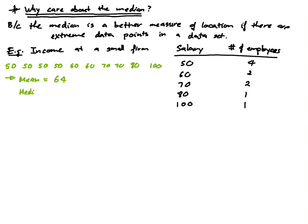Let's look at the median. To find the median, I remove the outermost values one by one until I end up with 1 or 2 values in the middle. Removing 50 and 100, then 50 and 80, then 50 and 70, then 50 and 70, I end up with 2 sixties in the middle. So the median is the average of those two numbers, which is $60,000.